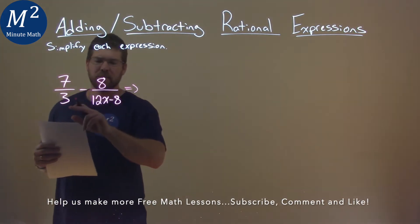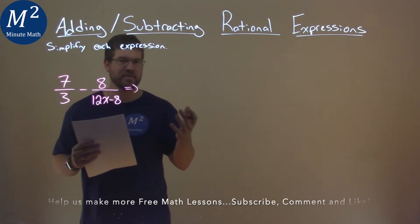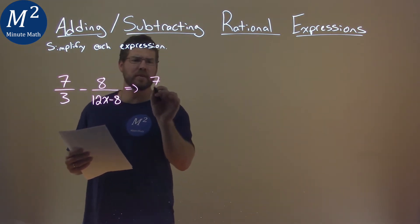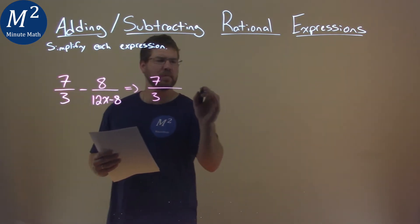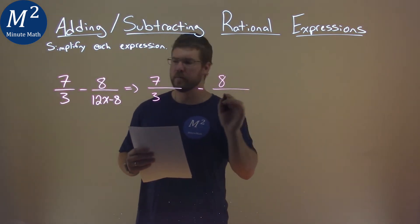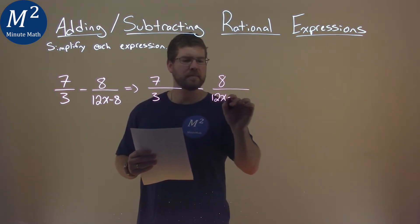We know we have to have the same denominator to add these fractions together. So I'm going to rewrite this: 7/3, give it some space, subtracted by 8/(12x-8).